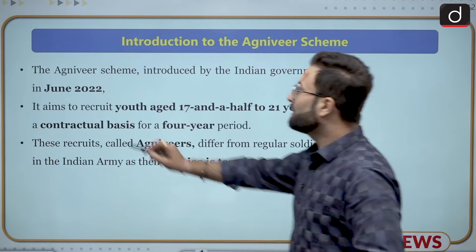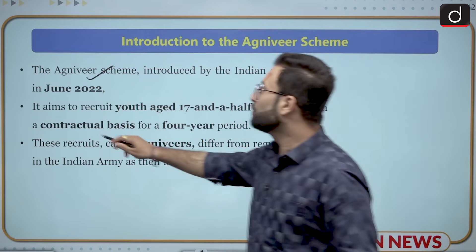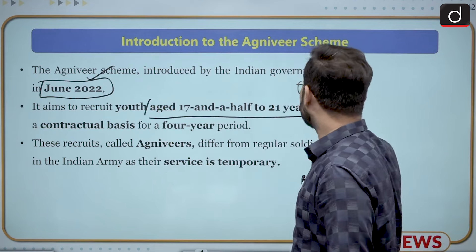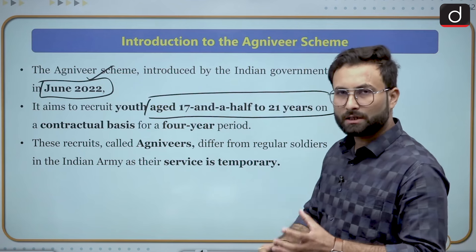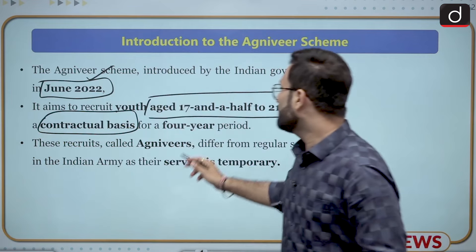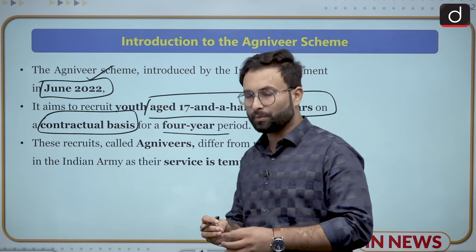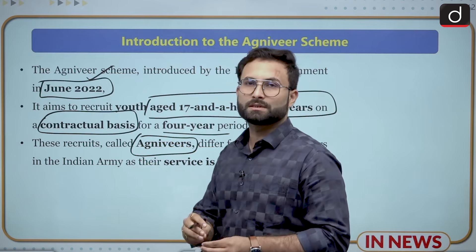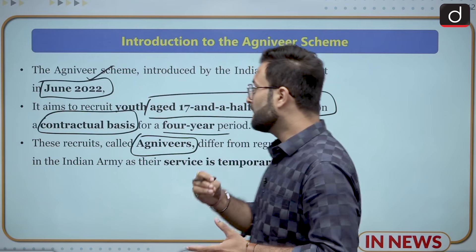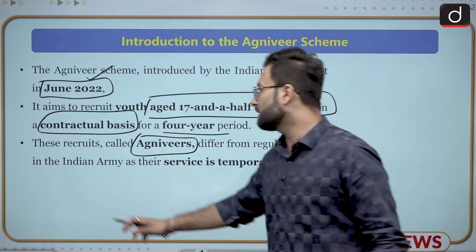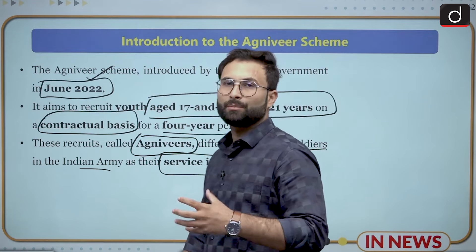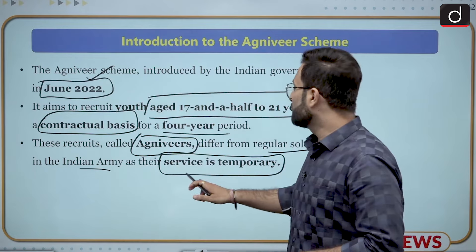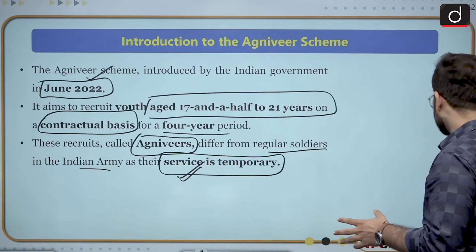The Agniveer scheme was introduced by the Indian government in June 2022. The aim of this scheme was to recruit young people aged 17.5 to 21 years on a contractual basis for 4 years. These recruits are called Agniveers, different from regular soldiers as their service is temporary. Such provisions for temporary military service also exist in the USA and other militaries.